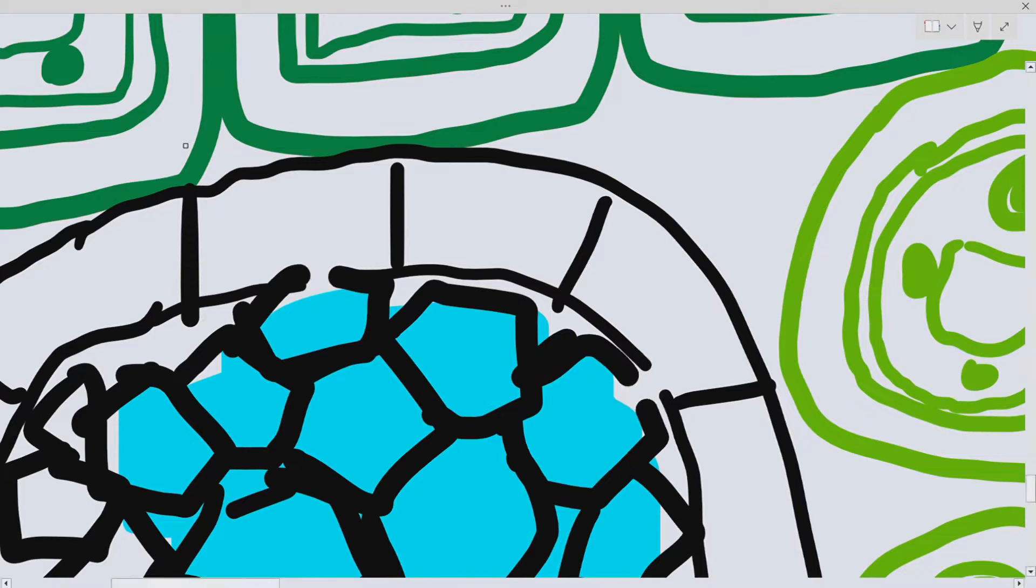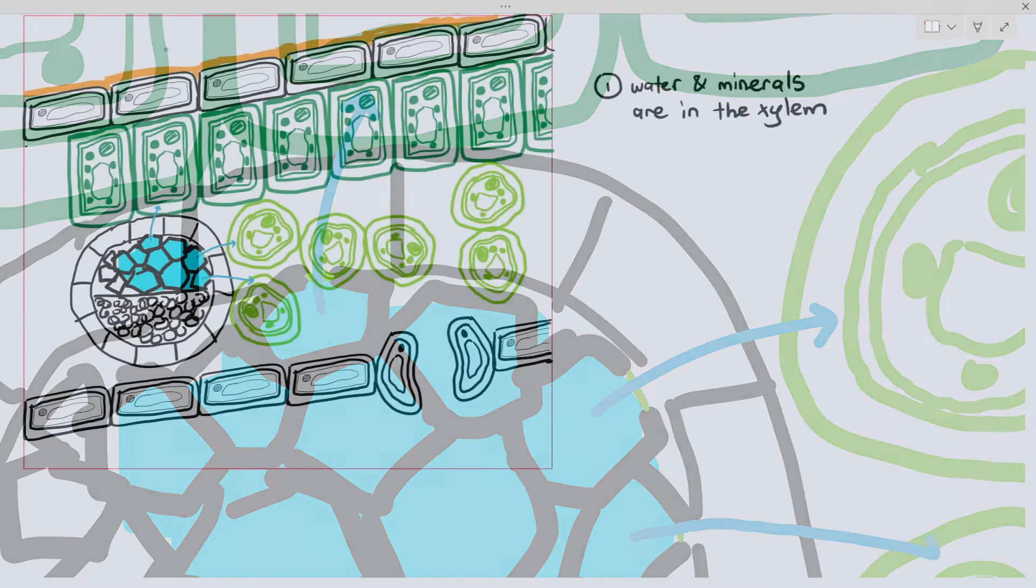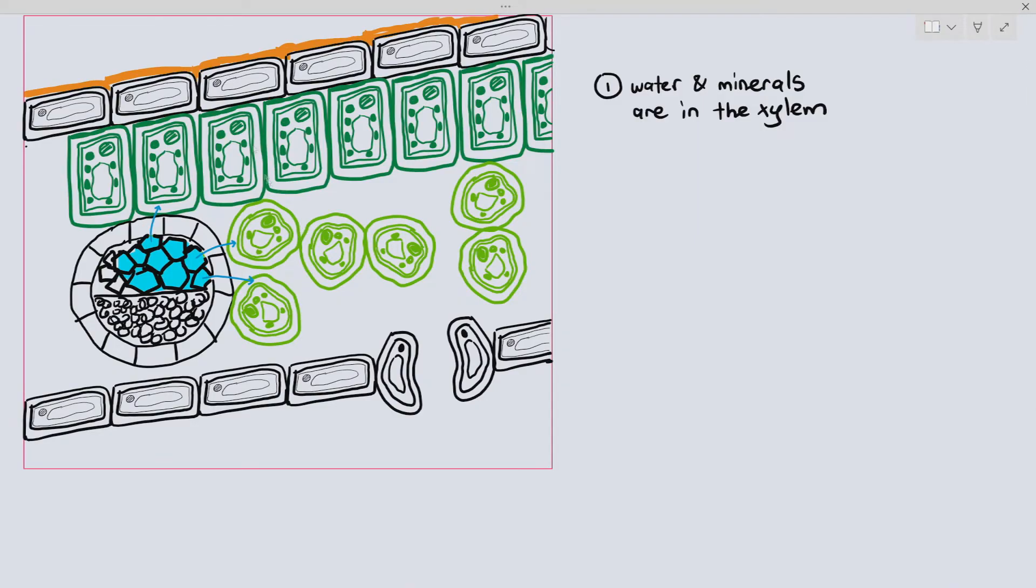Naturally, the water and minerals are in the xylem right now. So how do they go out of the xylem? Remember, the entirety of the xylem walls are not lignified. Certain parts of the xylem walls actually have this weird green color line that I'm drawing there, known as the pits, which are the cellulose walls. And the cellulose walls, they are permeable to water and minerals.